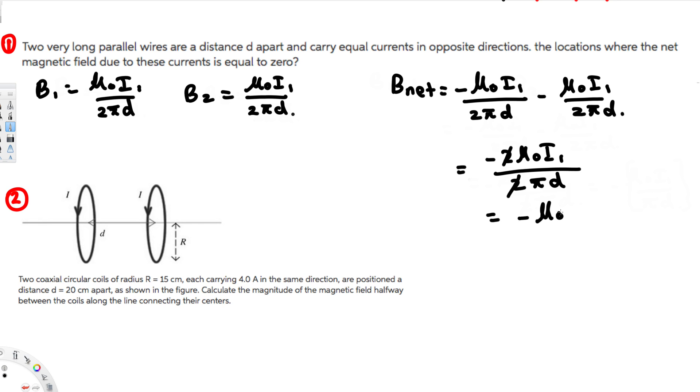If you notice, there's no possible zero magnetic field, so there's always a magnetic field. The answer is: nowhere the net magnetic field due to this current is going to be zero. So that's going to be the answer.